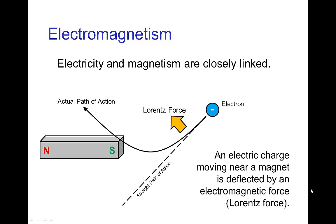Electromagnetism. Electricity and magnetism are closely linked. We've already saw that using electric current we can produce an electromagnet. Another example of the connection is that if we have an electric charge, say an electron, that is moving near a magnet, there's a force that acts on that moving charge, and that will deflect the path of action.